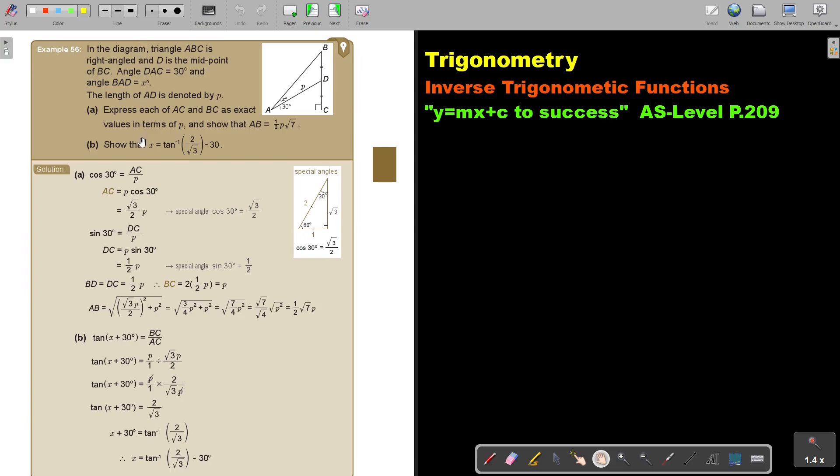Let's look at another example. In the diagram, triangle ABC is a right angled triangle, and D is the midpoint of BC. Angle DAC is 30 degrees, and angle BAD is X. The length of AD is denoted by P. Express each AC and BC as exact values in terms of P, and show that AB is this.